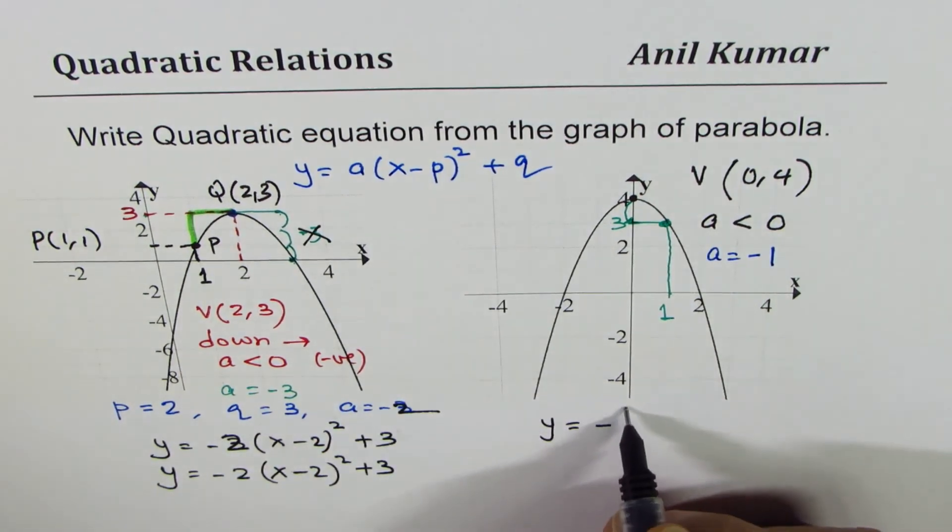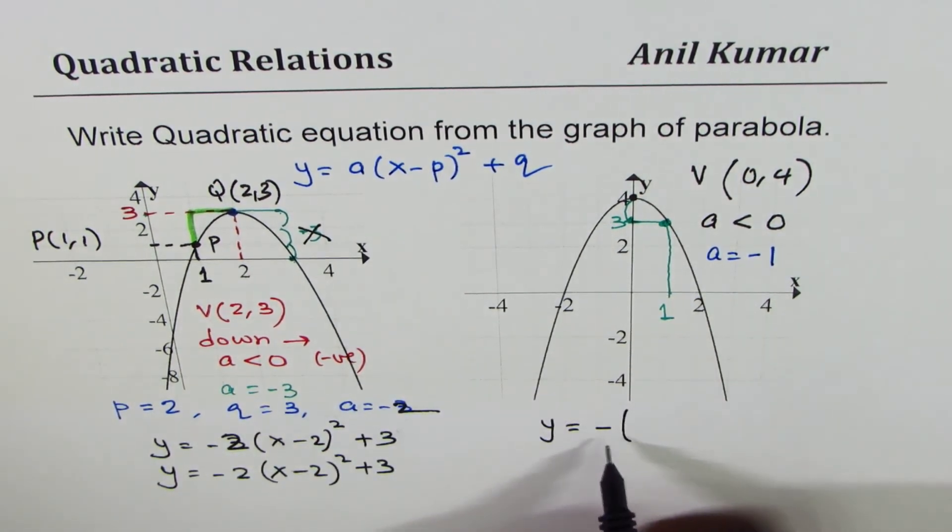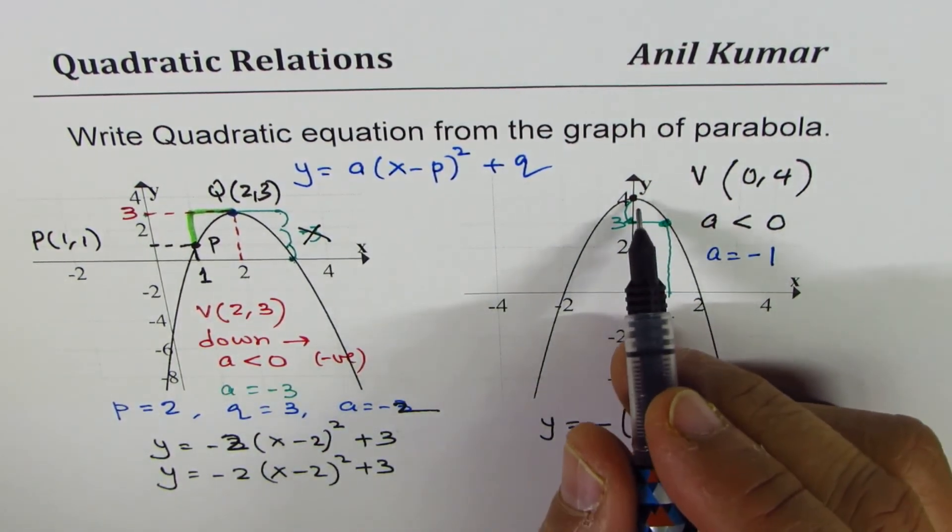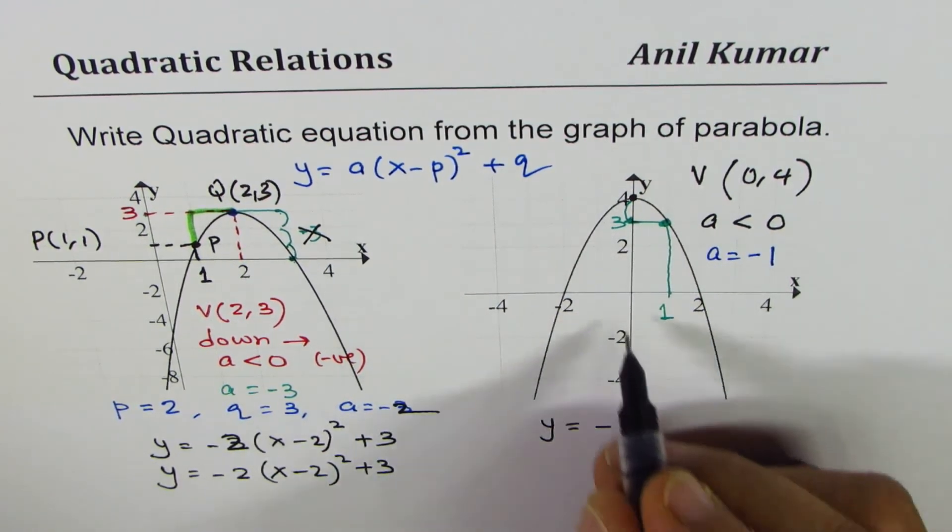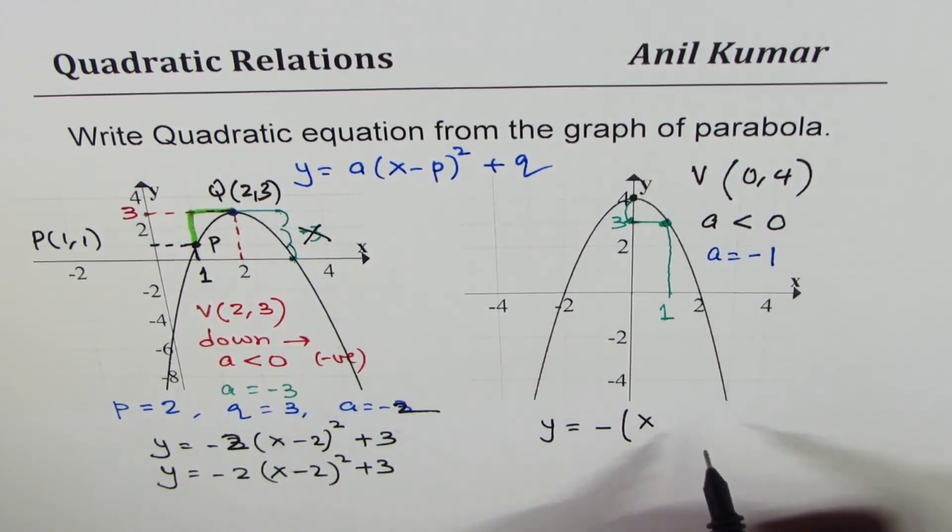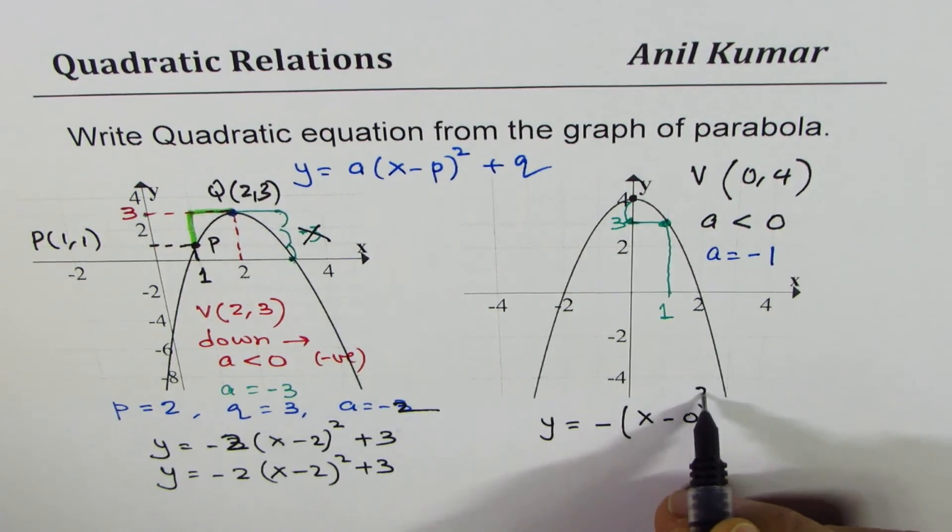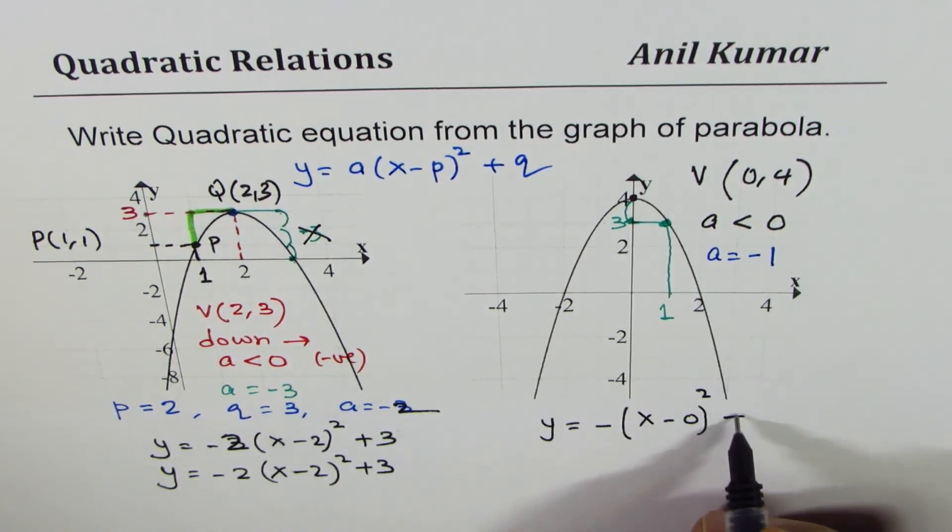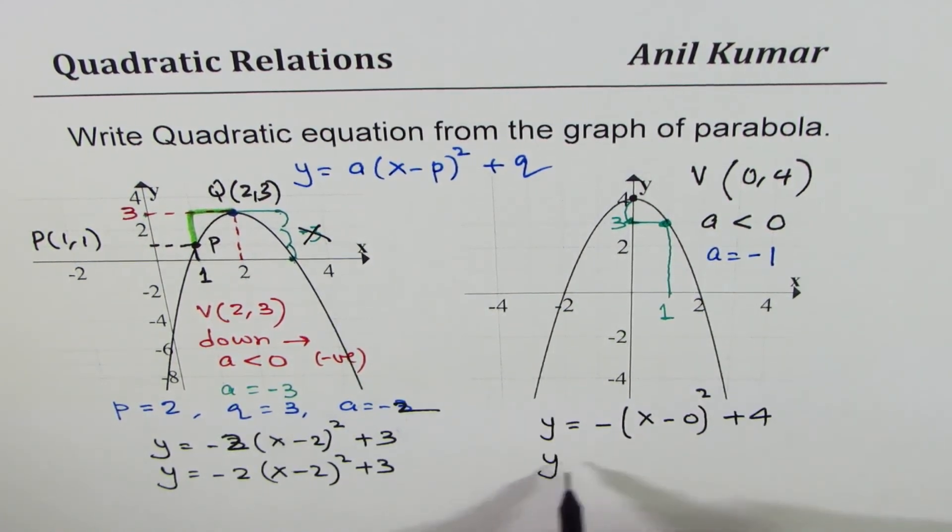So A is minus 1, so we write minus X, X minus 0. So when it is minus 0, there is no point writing, but I will write it in the first step. And then we will write final equation as minus X square plus 4.